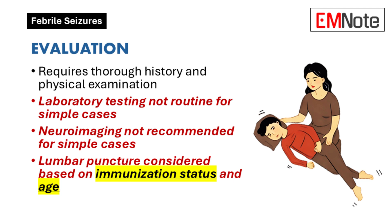Vaccines — vaccines for Haemophilus influenzae type B and Streptococcus pneumoniae have really been game changers. The rate of bacterial meningitis has dropped dramatically thanks to these vaccines, and this has changed the guidelines. The AAP no longer recommends routine LP for every child with a simple febrile seizure.